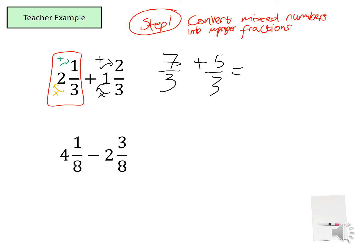So in total, when the denominators are the same, we have twelve thirds. Can we simplify it any further? Yes. Twelve thirds translates to twelve divided by three, which equals four. Or we can divide top and bottom by three, and that gives us four.